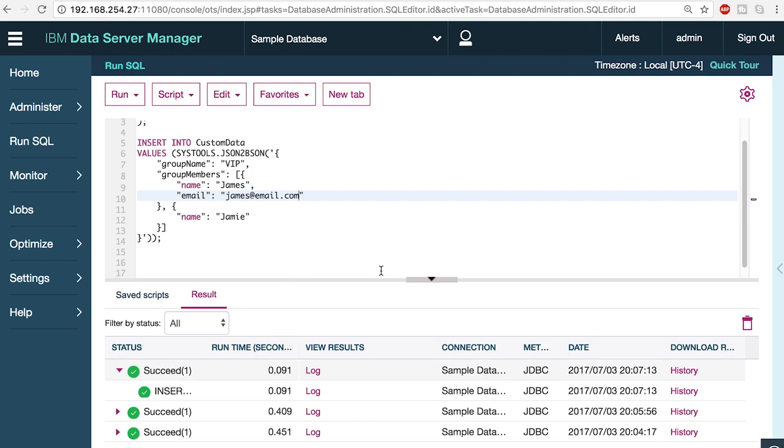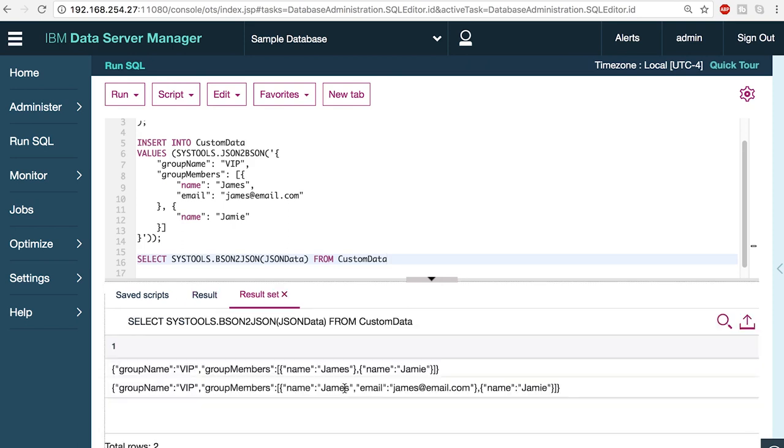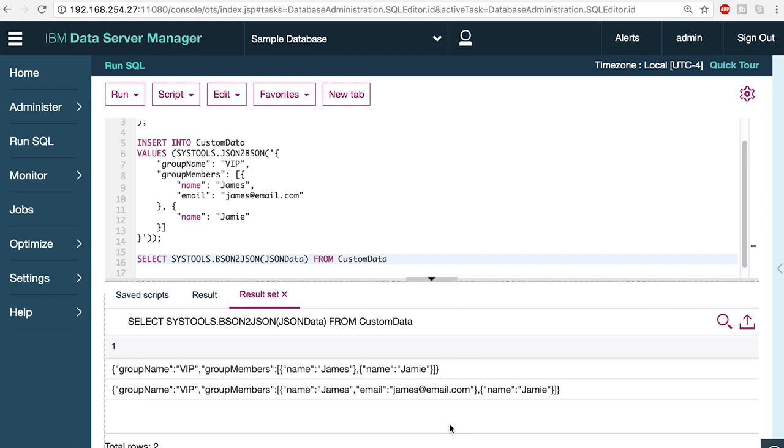So we got the data in there. How do we actually go about getting that data back out? We need to create a select statement. So we need to say select. And at this point, we're going to use another built-in function. So sys-tools.bson to json. That's going to convert our data back. And then we want to select it from custom data, which is our table name. Inside of these parentheses, we need to pass in the column that is in binary json format, which was json data. So let's run this and make sure it works. This gives us a result set. So when we click that, you can see that both rows are able to be inserted into the table and retrieved, but they don't have the same structure. And that is the cool part about this.